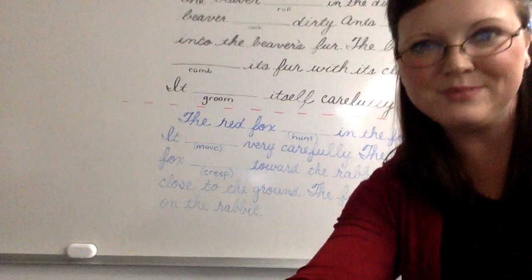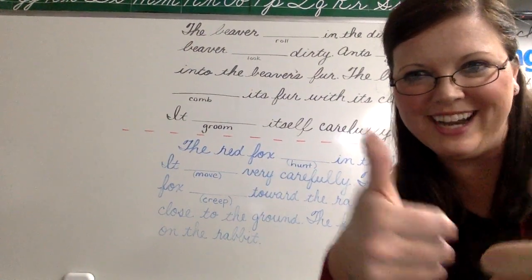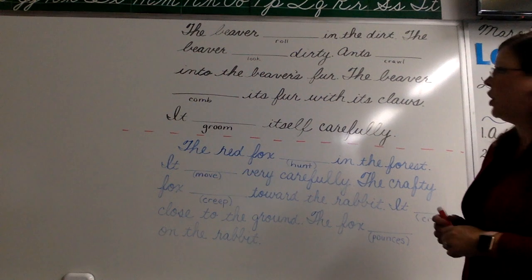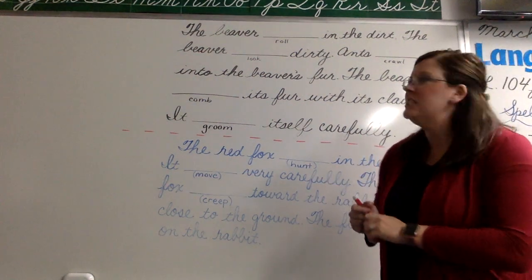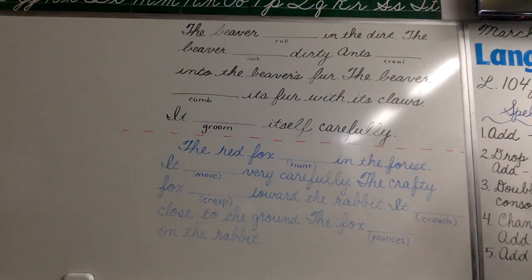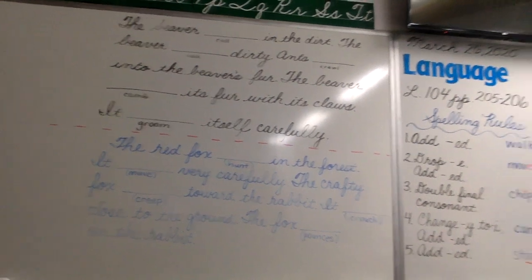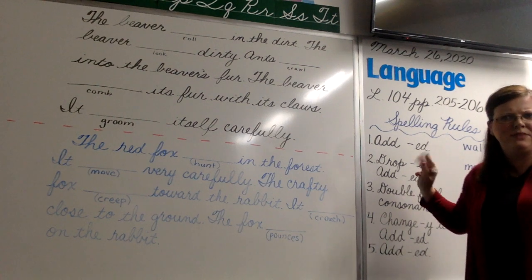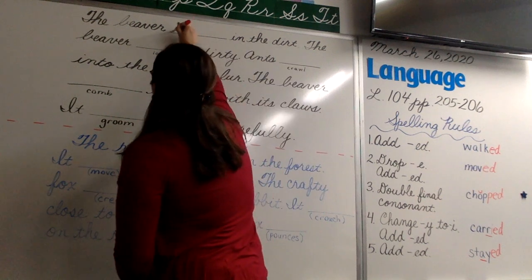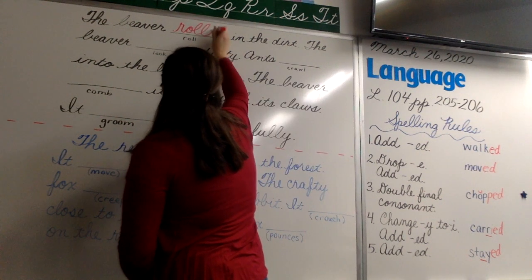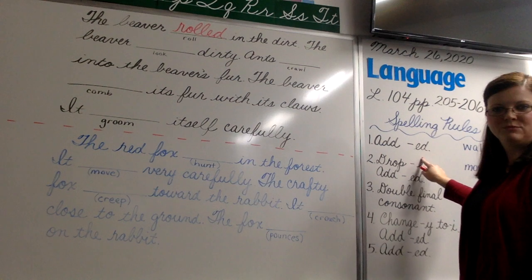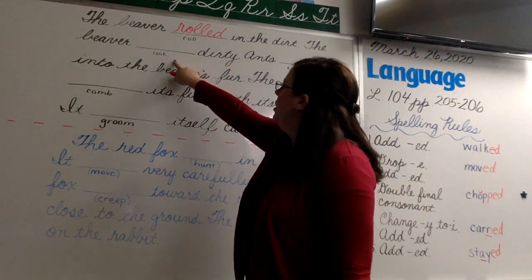Our job for the first story about a beaver is to take all of the verbs and change them to past tense. The beaver blank in the dirt — all of this has already happened in the past. So we're going to take 'roll,' and that applies with our first rule: just add an E-D. R-O-L-L-E-D. The beaver rolled in the dirt. The beaver blank dirty — add an E-D: L-O-O-K-E-D.